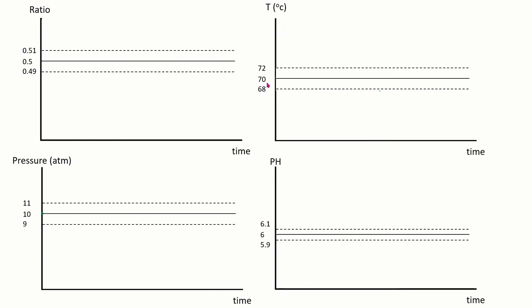Likewise, for temperature the permissible range is 68 to 72 degrees Celsius, for pressure it is 9 to 11 atmospheric pressure, and for pH it is 5.9 to 6.1. This gives rise to the tolerance band — the limits within which your variables must stay.